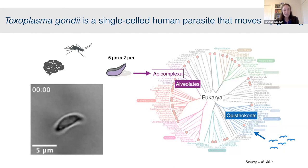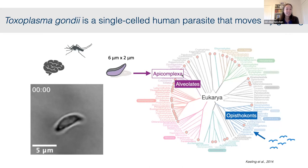Toxoplasma is a single-cell protist, a member of a group of parasitic cells called the Apicomplexa, and closely related to malaria parasites (Plasmodium). Toxoplasma gondii sits quietly in the brains of about a third of us humans, but can cause life-threatening disease in immunocompromised individuals and the developing fetus.